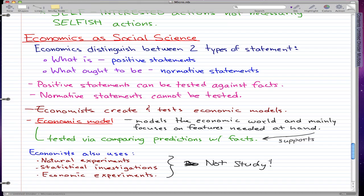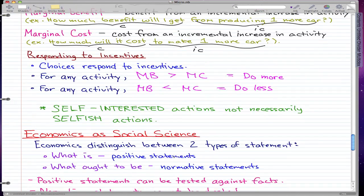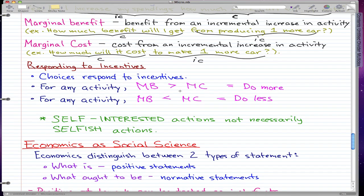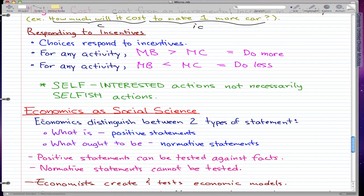What you really need to know in this video is responding to incentives. Marginal benefit greater than marginal cost, do more. Benefit less than cost, do less. Self-interested actions not necessarily selfish actions. What is and what ought to be, positive statements and normative statements. These are the things that I think for sure that positive statements and normative statements will be on your exam if you have a multiple choice exam, because it's really easily testable.